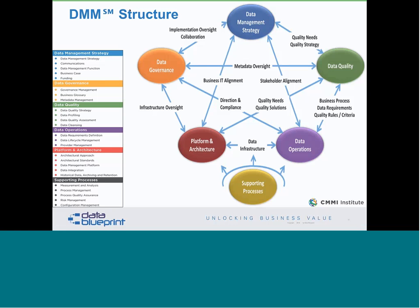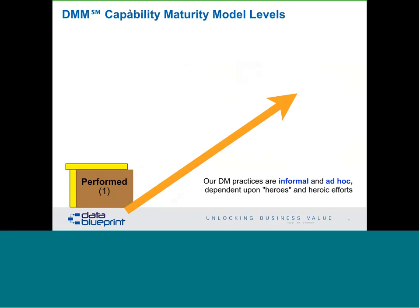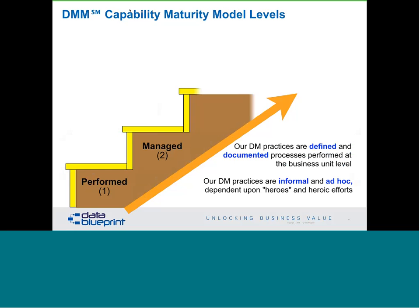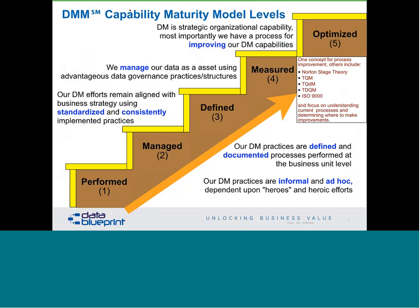The DMM structure from SEI is a standard we can use against most other things, with different talks coming later in the year. Each practice area needs to be governed in a way that makes sense. The capability maturity model from SEI for data works like this: at level one, everything is informal and depends on heroic efforts; at level two, it's managed; at level three, defined; at level four, measured; and at level five, optimized. Most managers have been exposed to this model due to its high adoption rate — it's the basis for TQM, ISO 9000, and other process improvement frameworks.